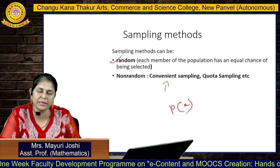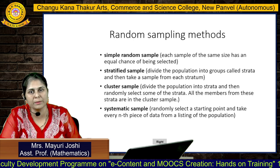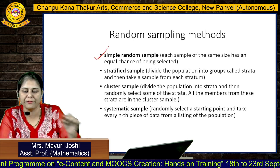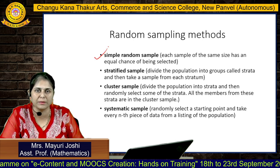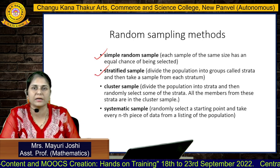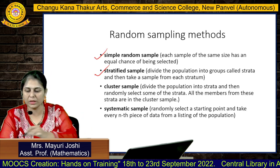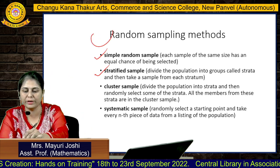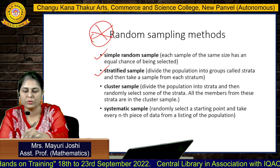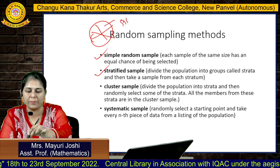If sampling is associated with probability, then it is called random sampling. Random sampling methods include different methods. First is simple random sampling. Another one is stratified random sampling. In stratified random sampling, we divide the whole population into strata.